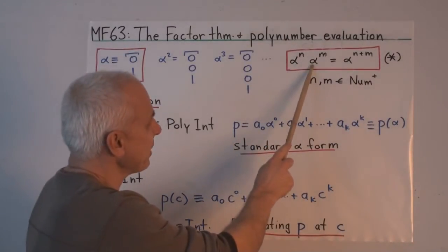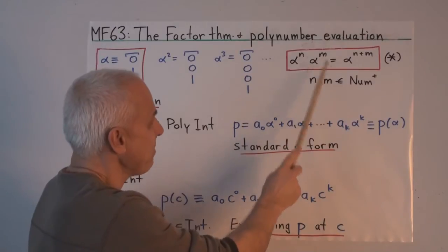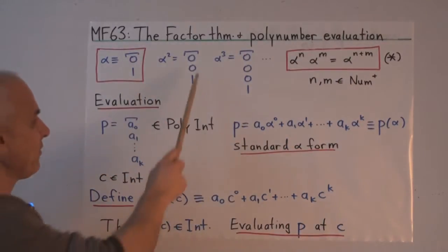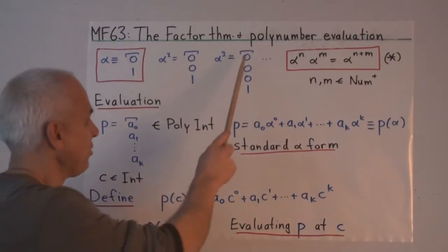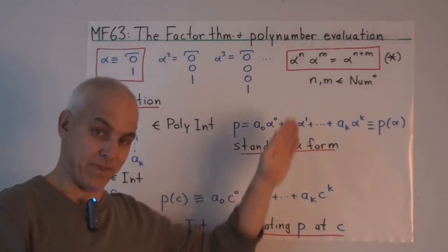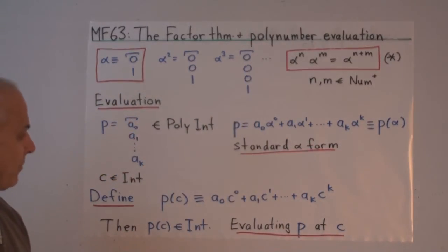And using poly number multiplication, the power alpha to the n times the power alpha to the m is the power alpha to the n plus m. Because if you have n zeros and you multiply it with the one with m zeros, then the way we've defined multiplication, you get the one with n plus m zeros.